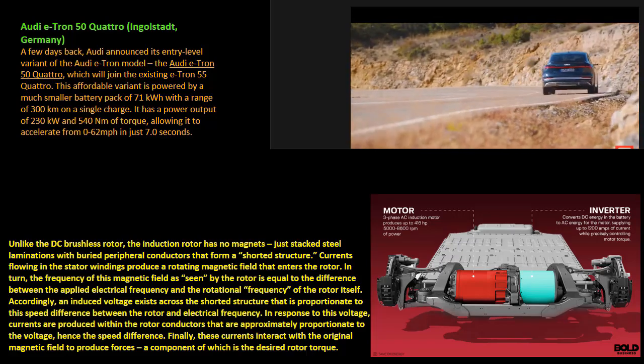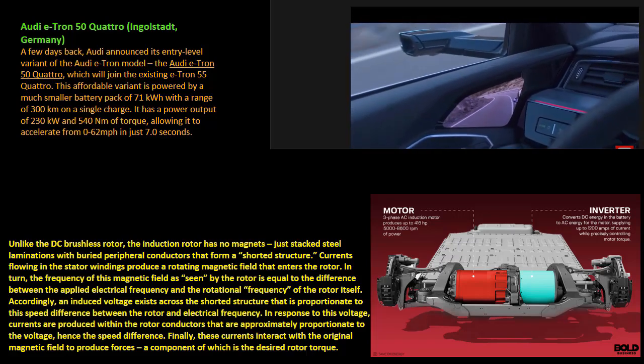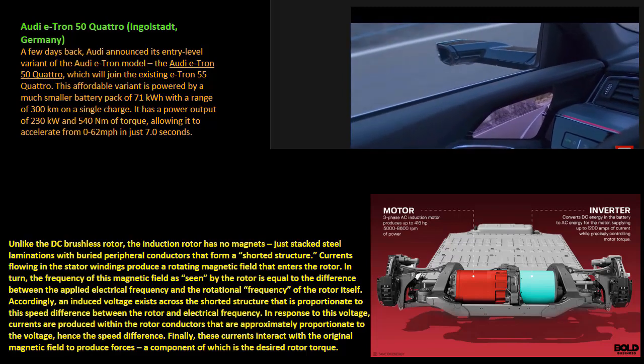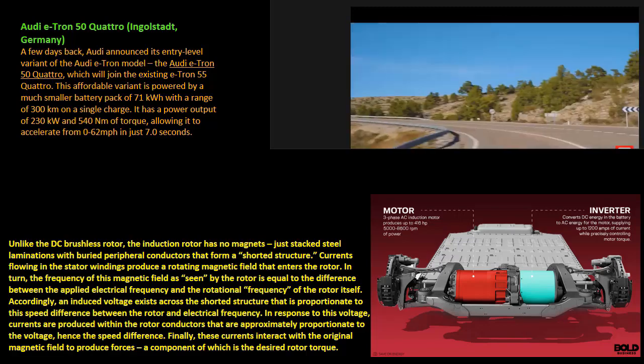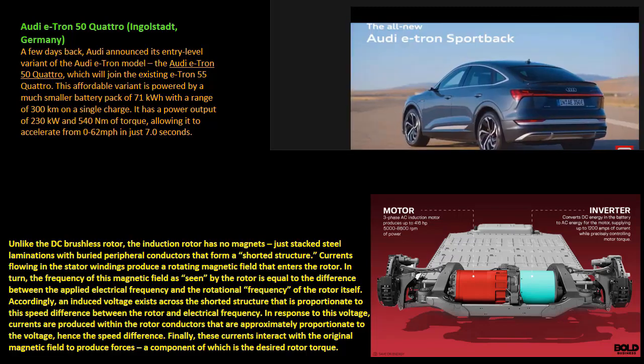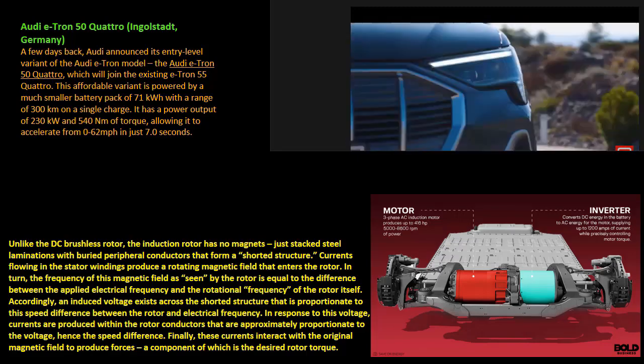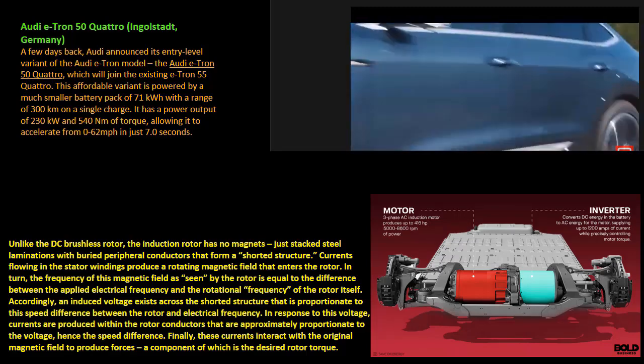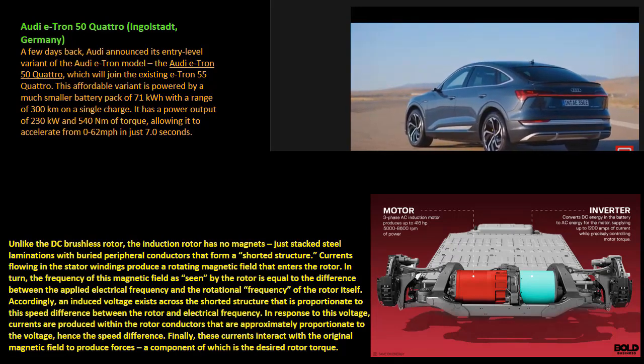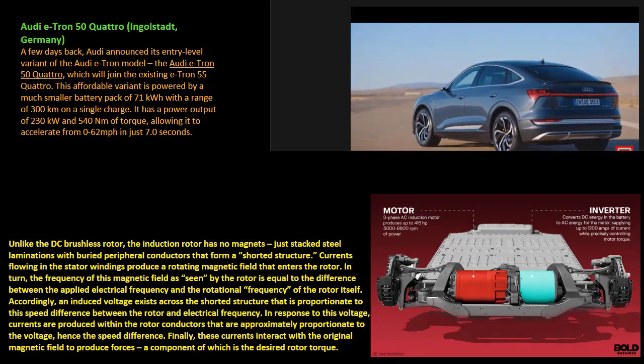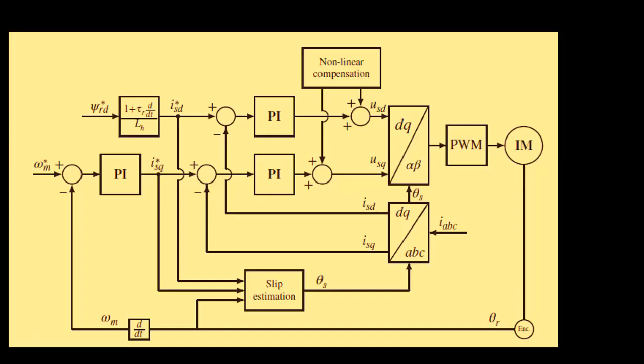Accordingly, an induced voltage exists across the shorted structure that is proportionate to this speed difference between the rotor and electrical frequency. In response to this voltage, currents are produced within the rotor conductors that are approximately proportionate to the voltage, hence the speed difference. Finally, these currents interact with the original magnetic field to produce forces, a component of which is the desired rotor torque.